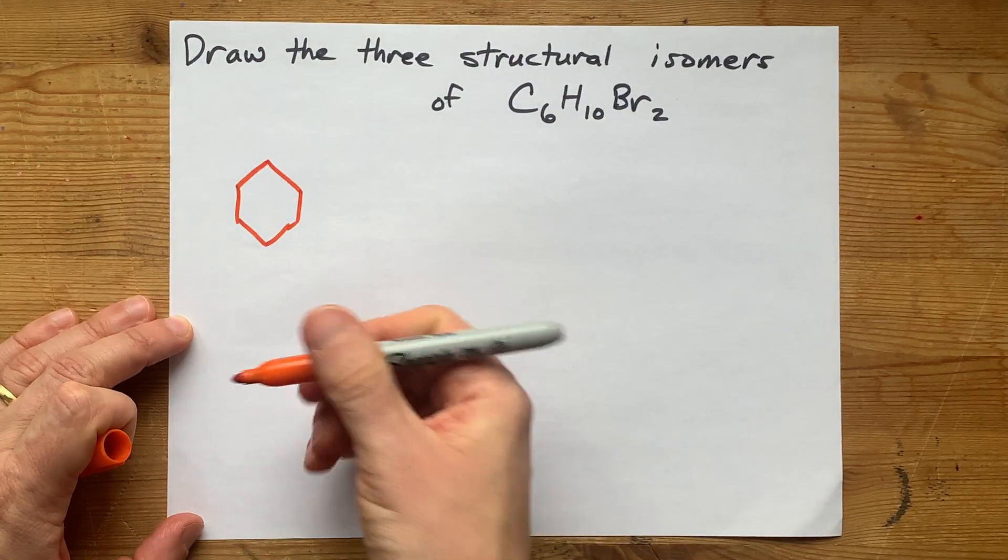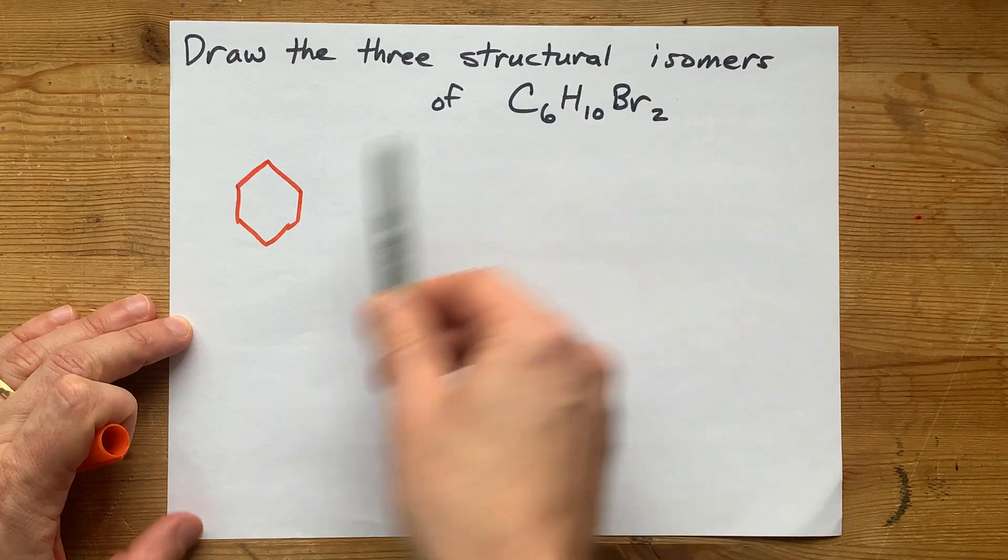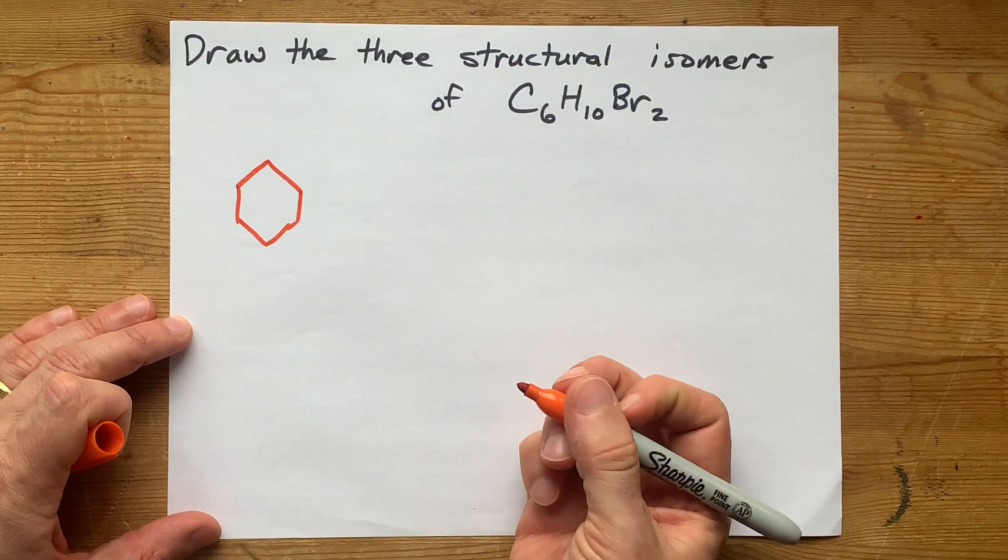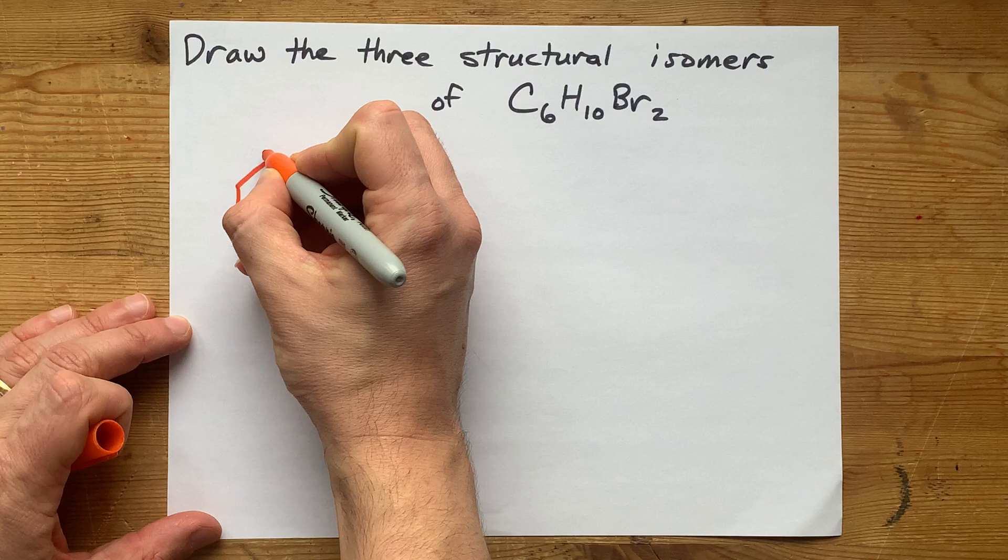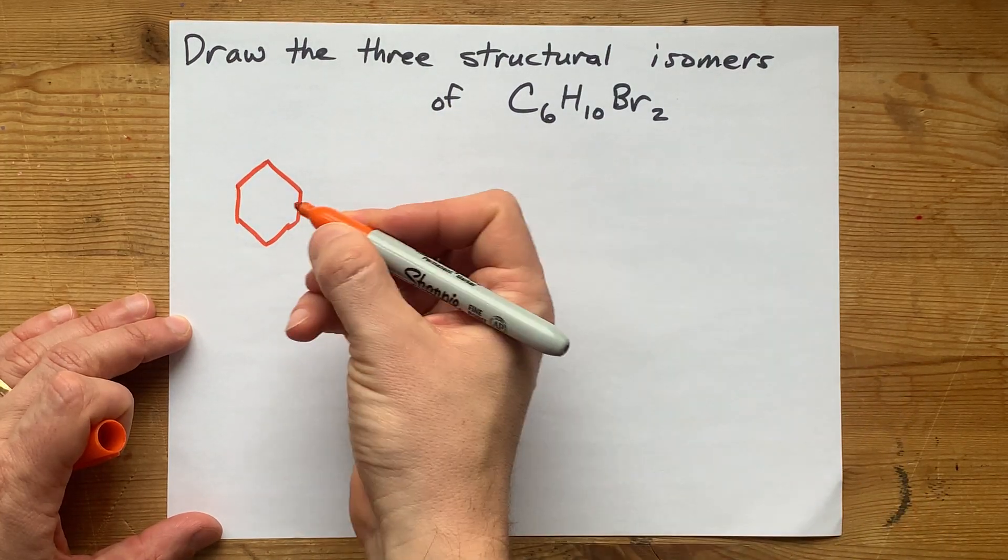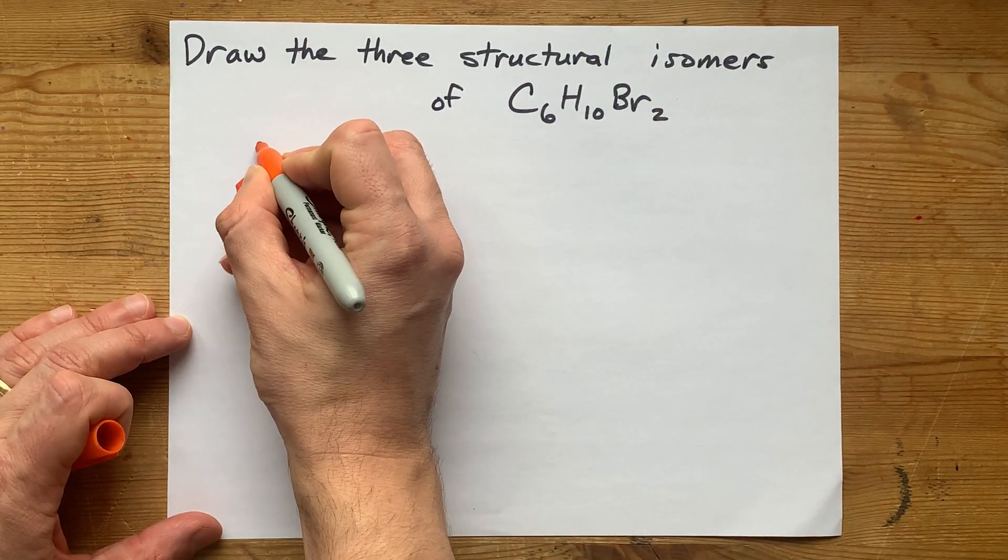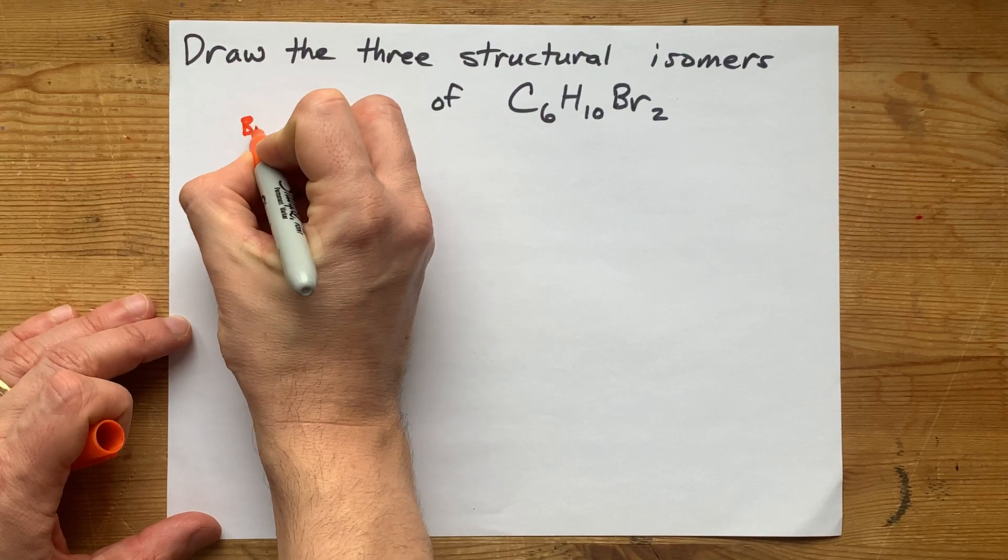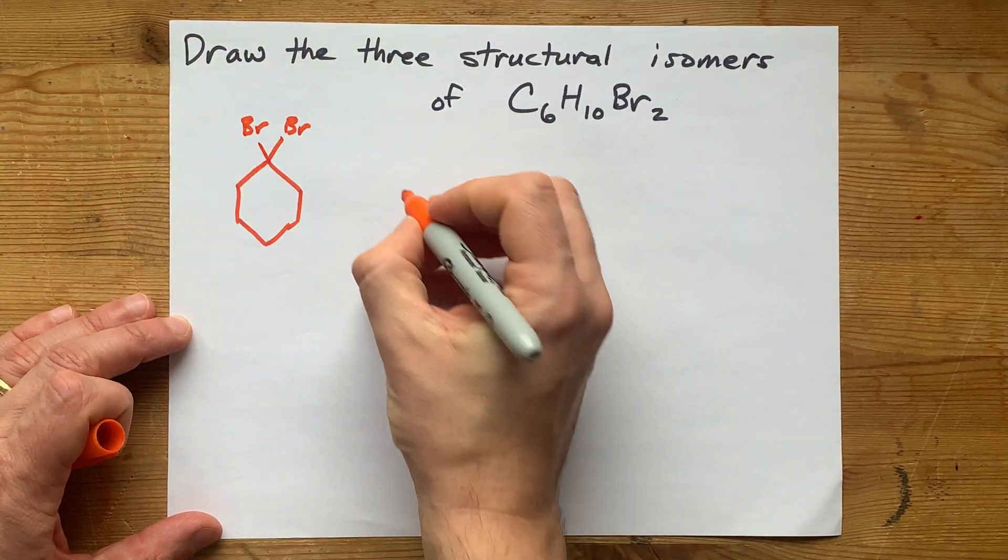Now, where are the two bromines on that ring is the question we're going to ask ourselves. Well, wow, this actually is an even worse question than I thought. One option is for the two bromines to both be on the same carbon.